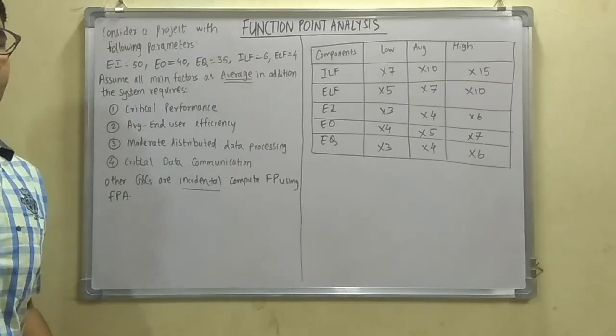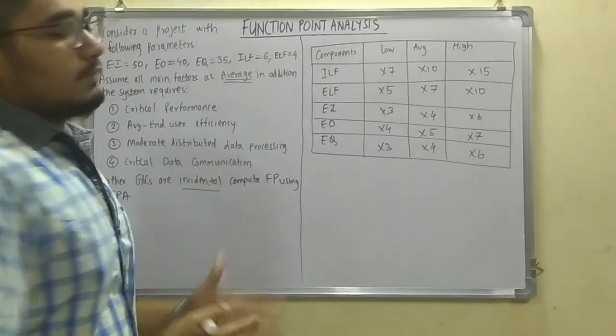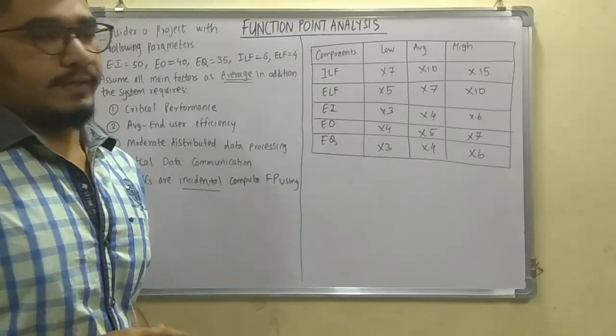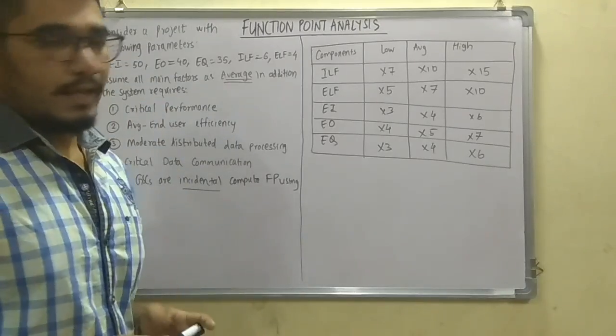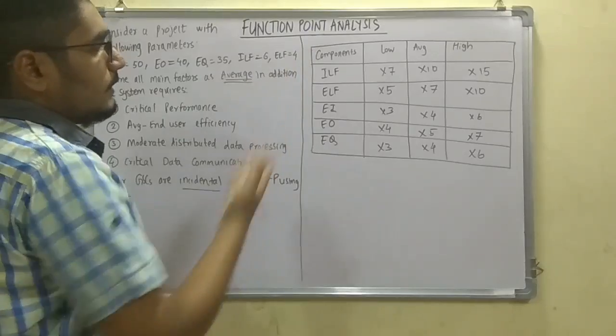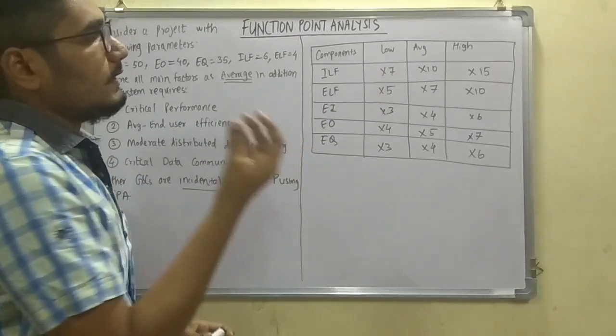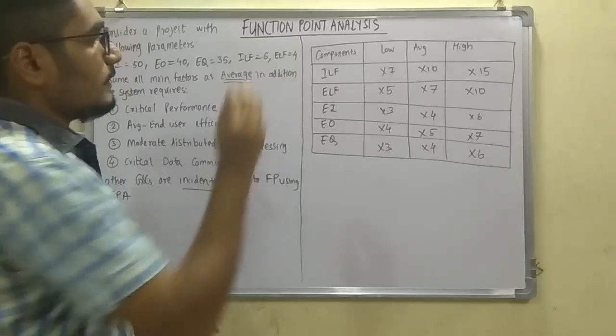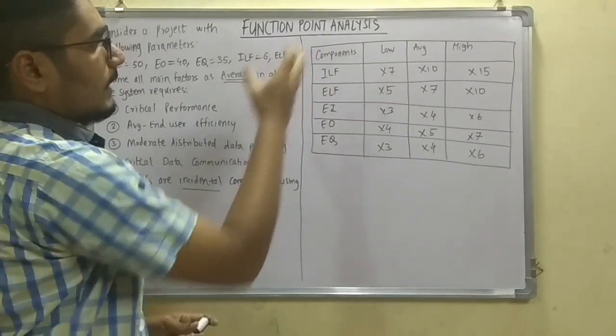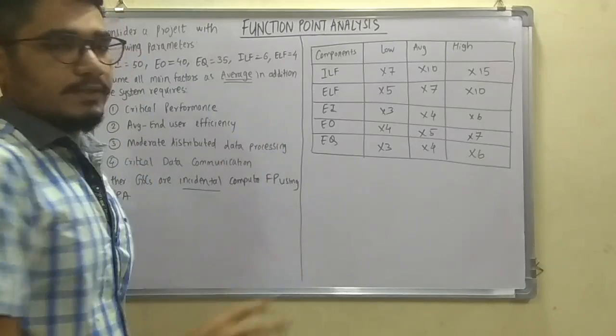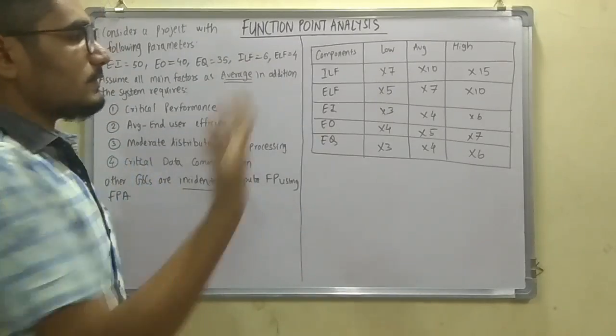Now let us move on to how to solve this problem. We have given this table. So this table is by default. Now what this table defines is the components which have been identified in the question. They have given the parameters ILF, ELF, EI, EO, and EQ, and there are some values or fields which are given as low, average, and high. These values for ILF, ELF, EI, EO, and EQ are fixed. This remains the same throughout the problem.